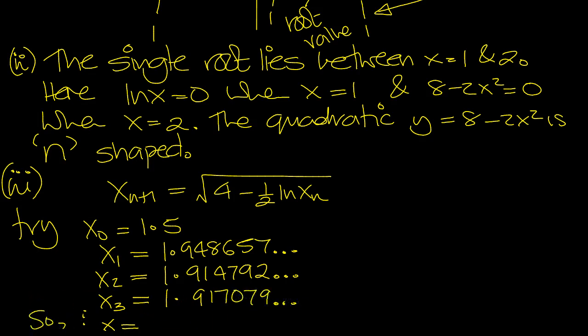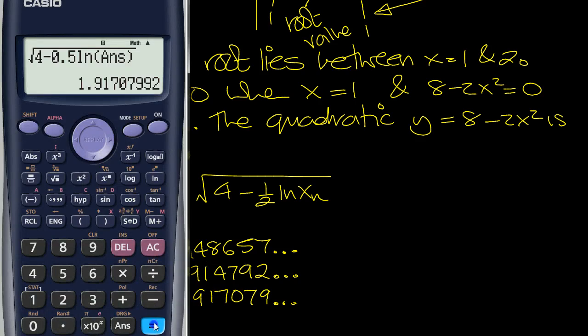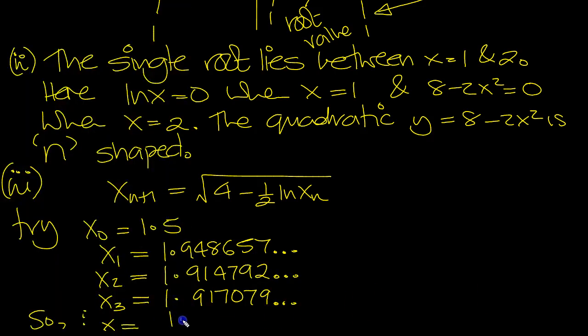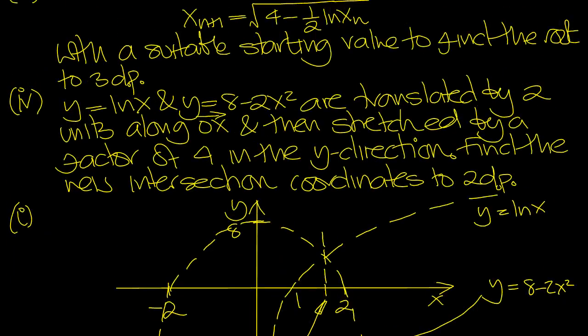So the root equals—let's just keep pressing equals until it settles down: 1.916934128. To 3 decimal places, x = 1.917. That's the root value for part 3.